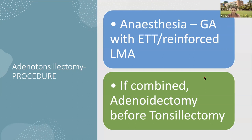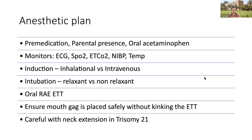If combined adenotonsillectomy is planned, adenoidectomy is done before tonsillectomy. The anesthetic plan may include premedication, parental presence, and oral acetaminophen as preemptive analgesia. Standard monitors are used including ECG, SpO2, end-tidal CO2, non-invasive blood pressure, and temperature. Induction may be inhalational or intravenous — both have pros and cons. Intravenous induction is smoother, while inhalational may be prone to airway obstruction. Depending on the patient profile, either can be chosen safely.